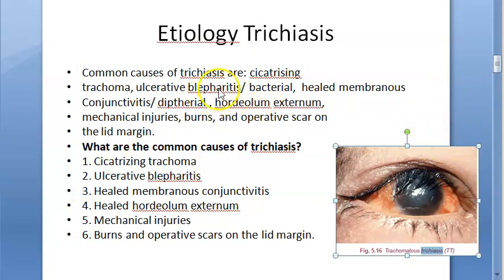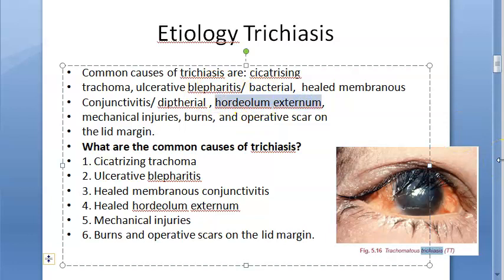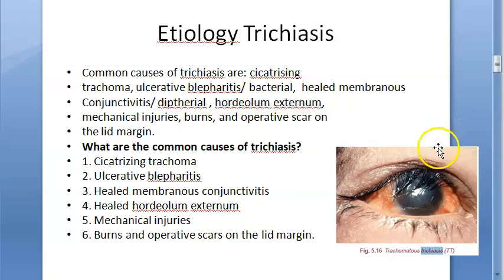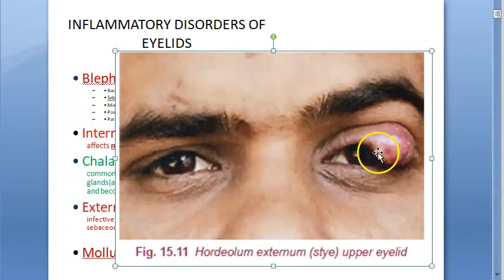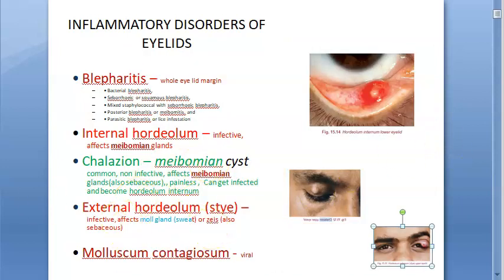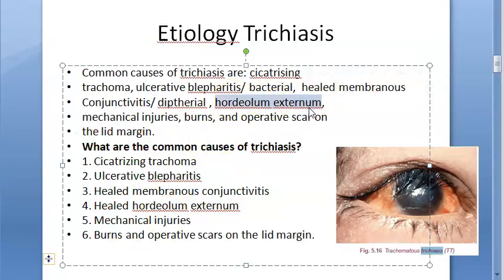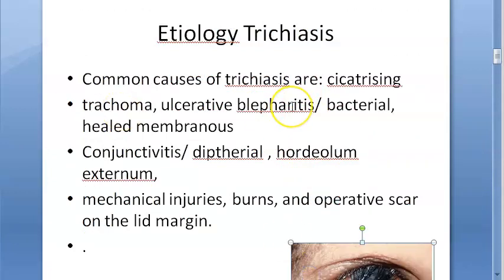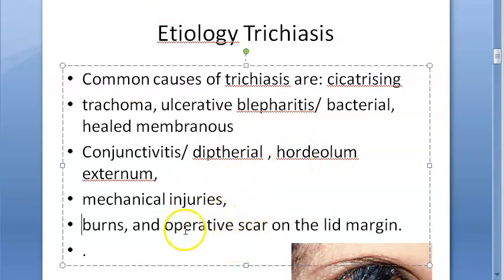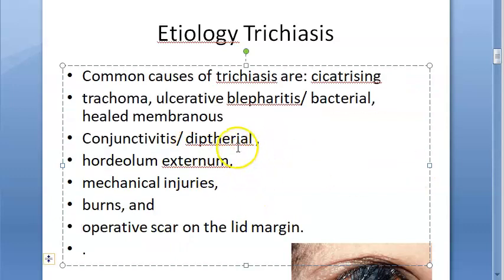Hordeolum externum — infection of the Zeis and Moll glands at the hair follicles of the eyelashes — is another cause. Mechanical injury, burns, and operative scars on the lid margin can also cause trichiasis. To summarize the etiology: cicatrizing trachoma, bacterial blepharitis, diphtherial membranous conjunctivitis, external hordeolum, mechanical injuries, burns, and operative scars.